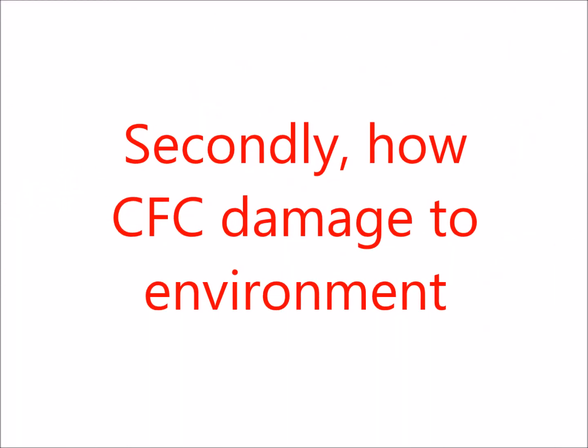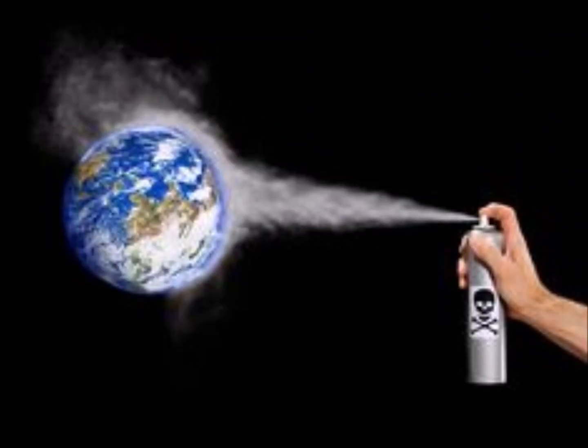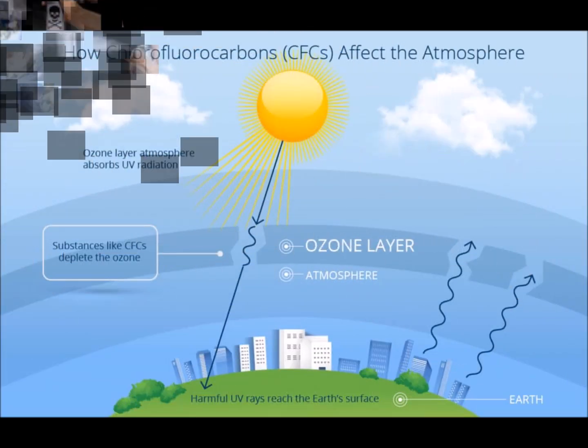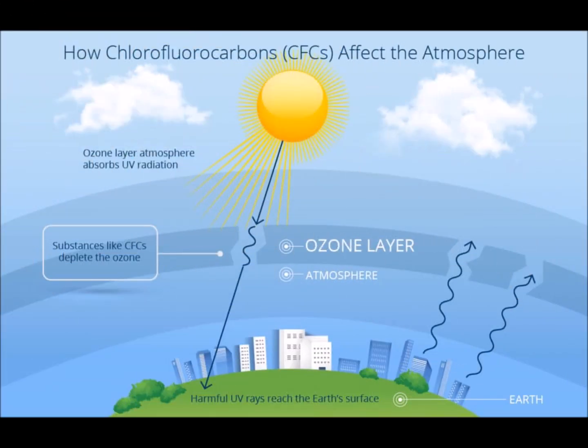The way CFCs harm our environment is by breaking down the stratosphere, which leads to chemicals like chlorine directly attacking the ozone layer. The ozone is a layer of the Earth's atmosphere, also referred to as dry oxygen or ozone.